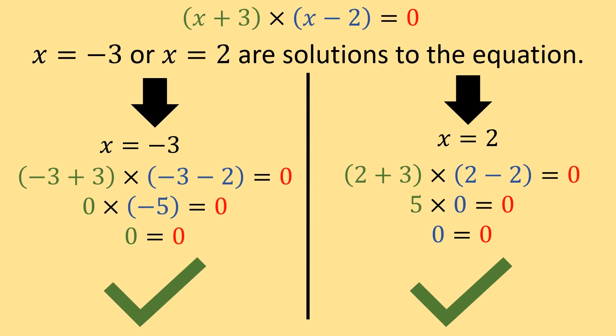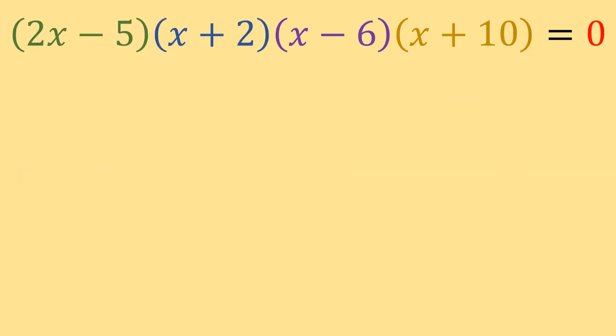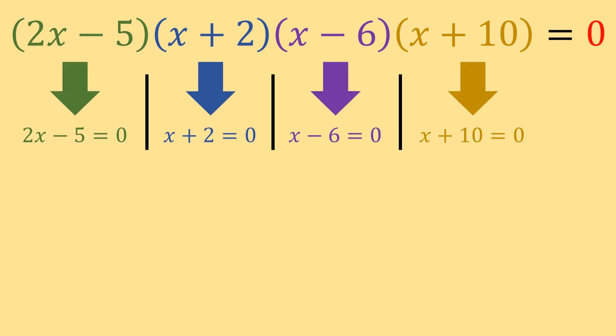This also isn't limited to the product of two binomials. Consider this equation here. Using the zero product property, we would set each binomial equal to zero, and then for each one, we would just solve for x.